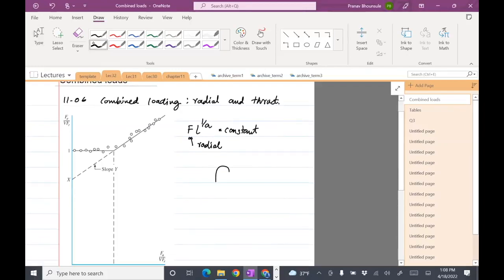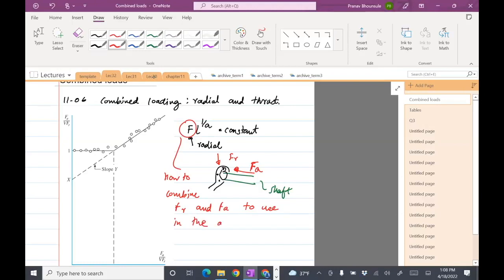But what if the bearing is, so assume there's a bearing. The radial load comes this way. The axial load, assume that it's the shaft, the axial load will come this way, along the axis of the shaft. So we want to basically use that formula, but how do we combine FR and FA into a single F which can then go in this equation.